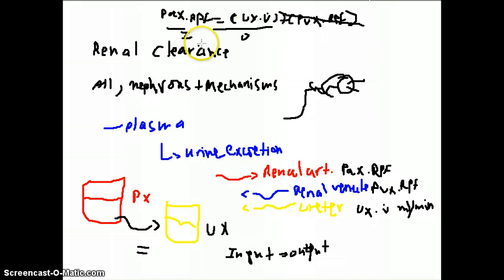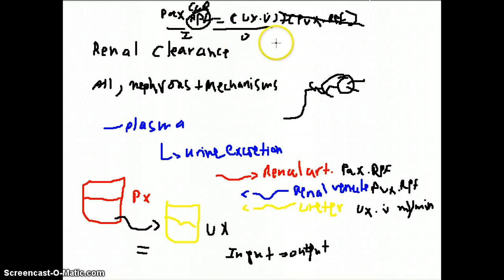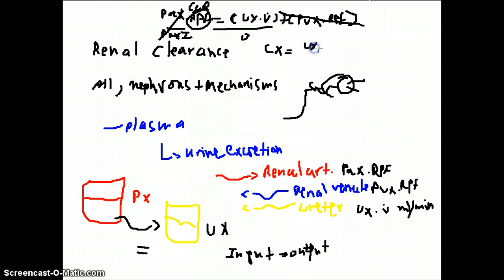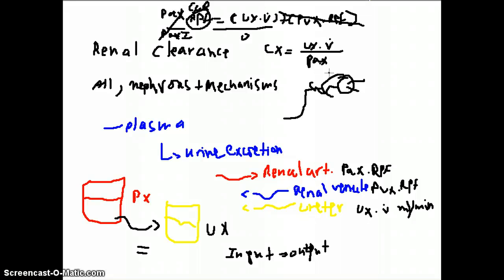Rearranging this equation, the renal plasma flow here becomes the glomerular filtration rate, or it could be the renal plasma flow depending on what you want to measure, or simply the clearance of the substance. So clearance equals: urine concentration of X multiplied by urine flow (volume), divided by the plasma concentration. This is the classical clearance equation used to measure renal plasma flow, glomerular filtration rate, and the clearance of any solute.